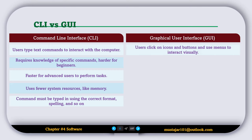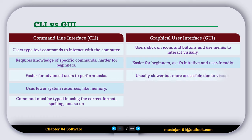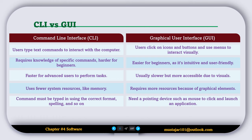In GUI, users click on icons and buttons and use menus to interact visually. It is easier for beginners as it is intuitive and user friendly. It is usually slower but more accessible due to the visuals. It requires more resources because of graphical elements, and needs a pointing device such as a mouse to click and launch applications.